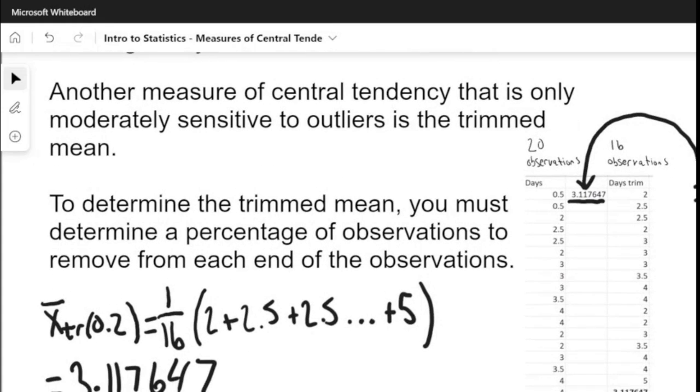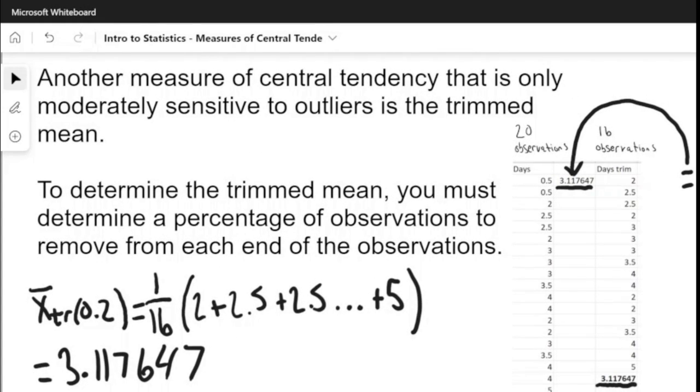Another measure of central tendency that hopes to cut down on the effects of outliers is a trimmed mean, which is a moderately sensitive measure of central tendency.